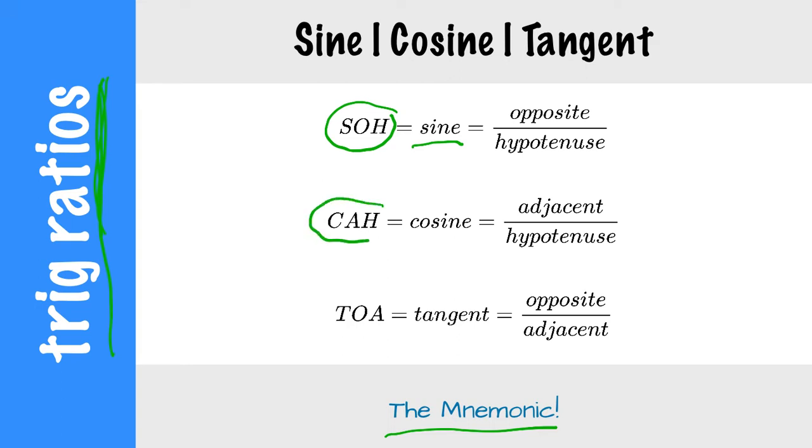CAH or cosine. There's your C, A, and H: adjacent over hypotenuse. And TOA means tangent, which is opposite over adjacent.